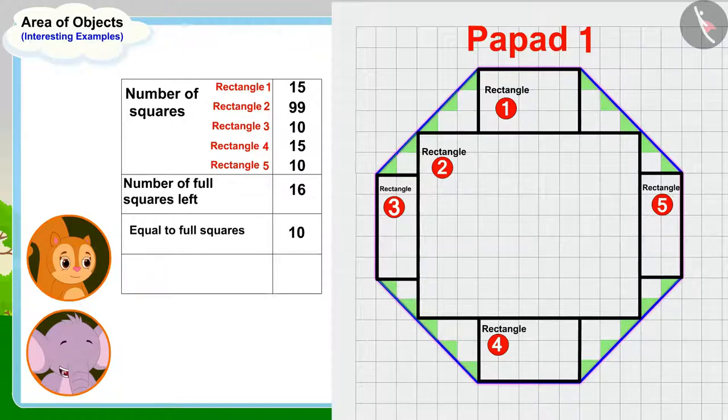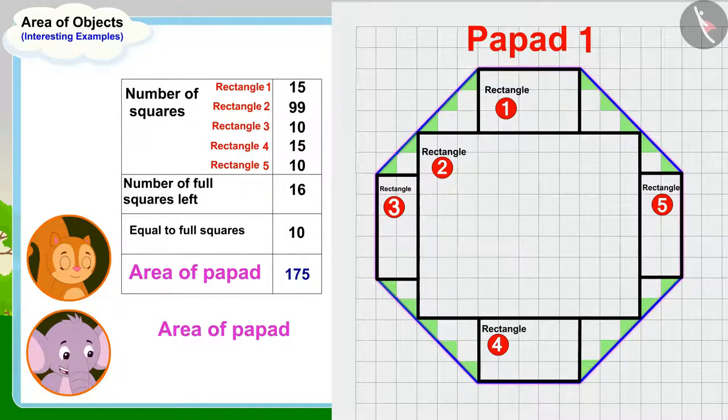Now, this is very easy. To find the area of this papar, we just have to add the numbers of all these squares. Look, Chanda, there are 175 squares in total in the area of this papar. In other words, the area of this papar is 175 square centimeters.